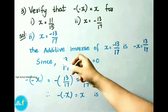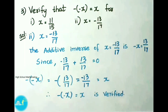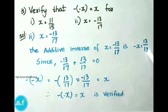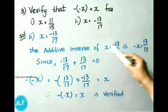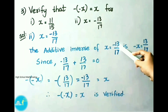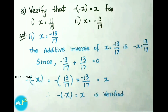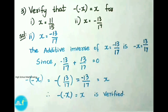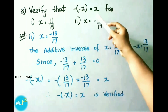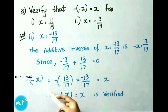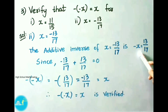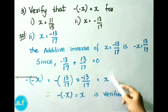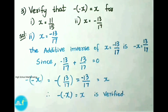See now, third question, second sum. Here we have x equal to minus 13 by 17. The additive inverse of x equal to minus 13 by 17 is minus x equal to 13 by 17. Additive inverse of x is minus x, and additive inverse of minus 13 by 17 is 13 by 17. Since minus 13 by 17 plus 13 by 17 is equal to 0. They ask us to verify minus of minus x is equal to x. So we have written minus of minus x. That equals to minus of minus x value is 13 by 17. That equals to minus 13 by 17, which is equal to x. Therefore, minus of minus x is equal to x. Hence, it is verified.